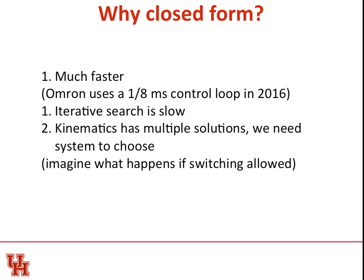So why closed form? Well, first off, it's much faster, because you've got just these equations that are trigonometric equations. We can push that through a computer very fast, and it has to be fast. A couple of years ago, I was getting trained at Omron Automation Company, and they were showing us their industrial controllers, and told us that they were using a one-eighth millisecond control loop. So eight times a millisecond, 8,000 times a second, they are recalculating their inverse kinematics. And so you're doing this code very often. It ought to be fast. Whereas iterative search is slow.